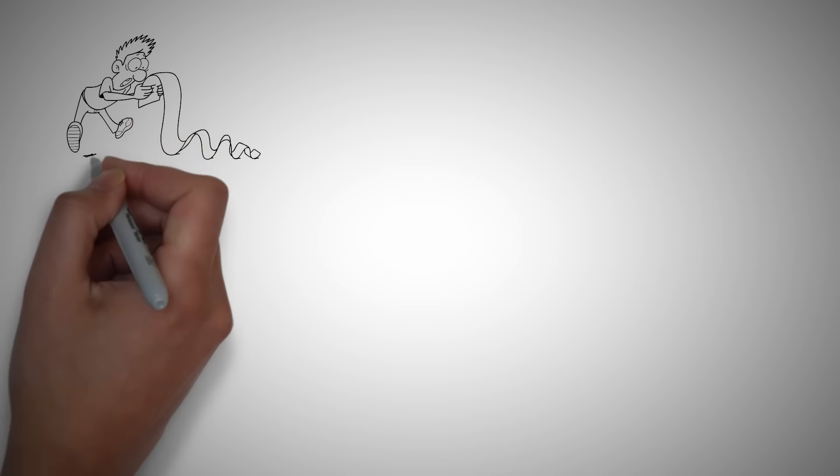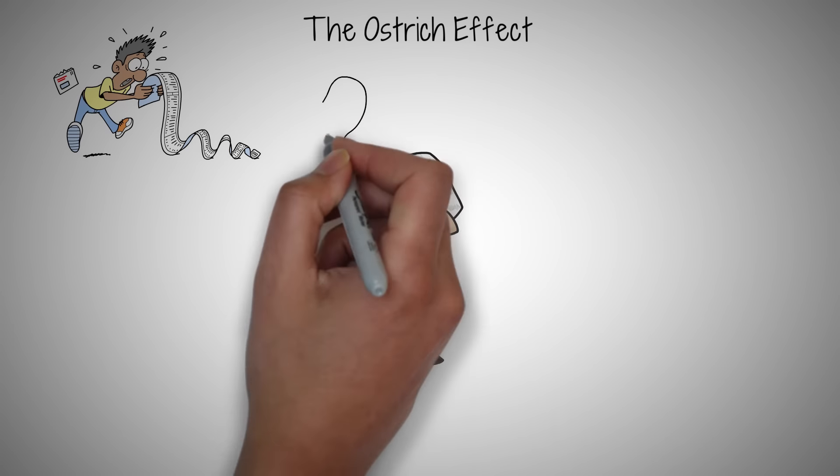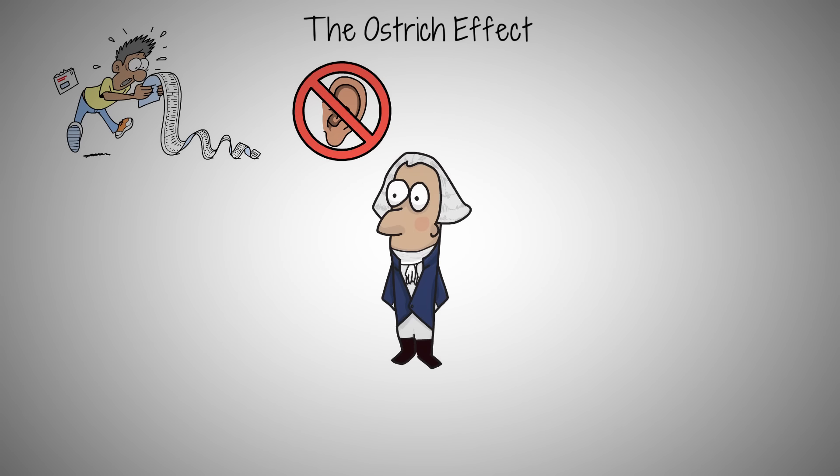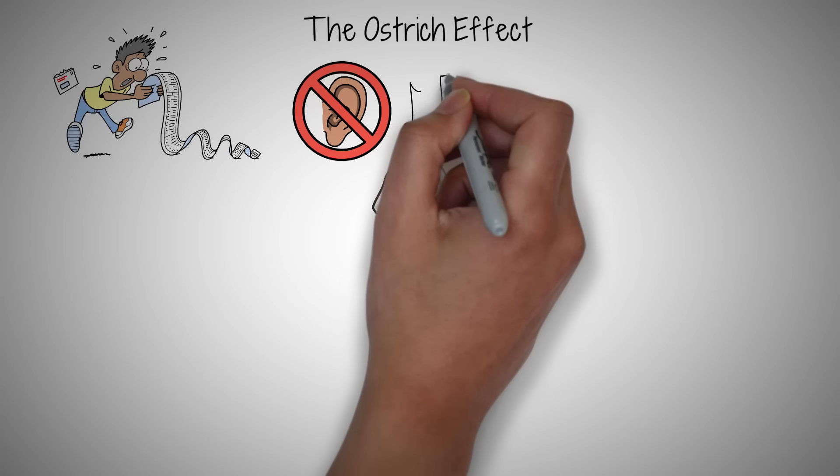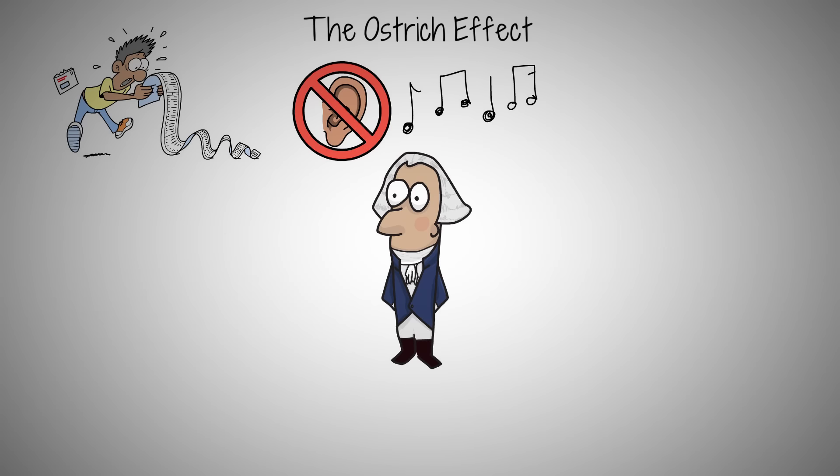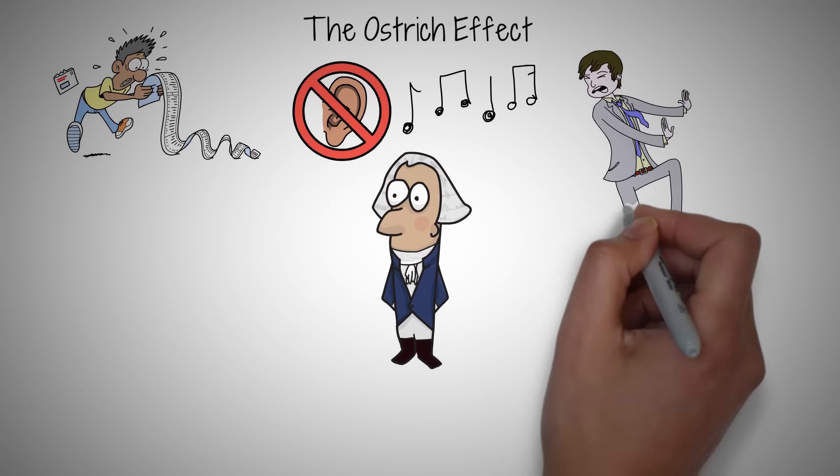Ever delayed opening a piece of mail because you knew it was a bill? That's the ostrich effect at work. Consider the tale of Ludwig van Beethoven. Despite losing his hearing, Beethoven refused to ignore his situation. Instead, he faced it, adapting his methods to continue composing. His determination led to some of the most profound music ever written, like his Ninth Symphony.